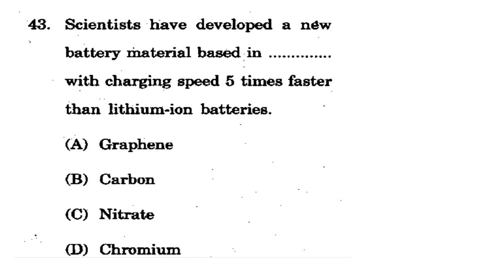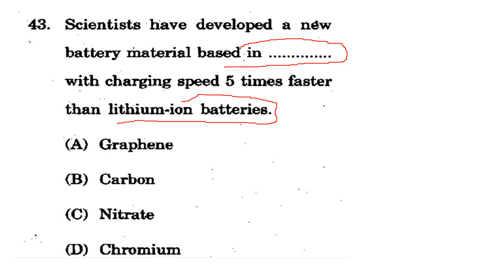Question 43: Scientists have developed a new battery material with charging speed 5 times faster than lithium-ion batteries. What material is it based on? Options: graphene, carbon, nitrate, chromium. The correct option is A - graphene. Remember: graphene-based batteries have charging speed 5 times faster than lithium-ion batteries.